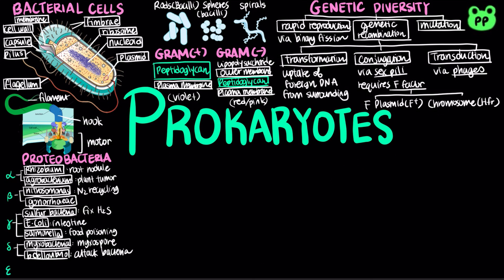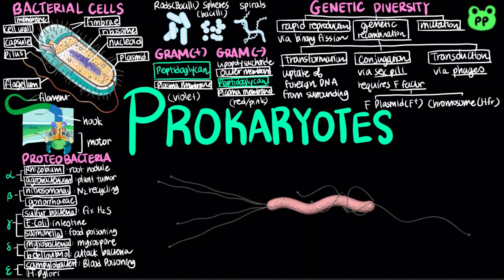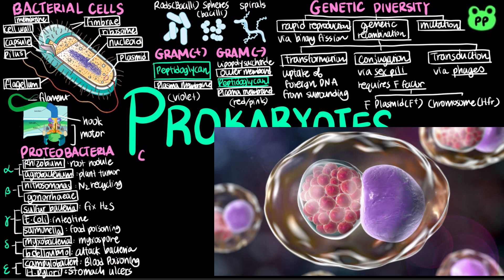The last subgroup, epsilon-proteobacteria, includes Campylobacter, which causes blood poisoning and intestinal inflammation, and Helicobacter pylori, or H. pylori, which causes stomach ulcers. Chlamydias are a group of intracellular parasites that lack peptidoglycan.